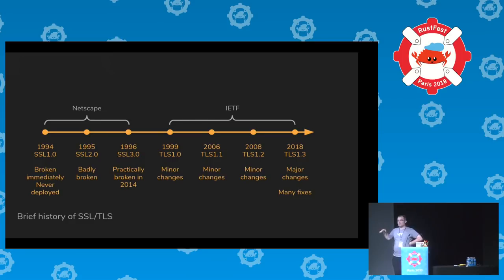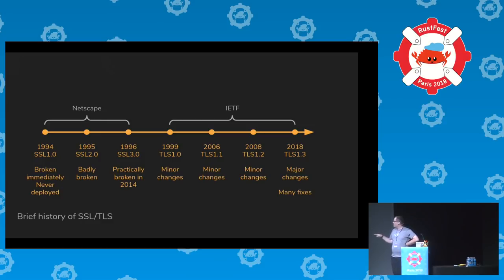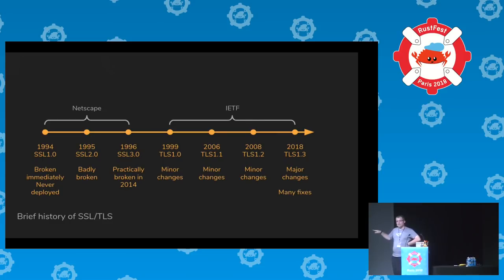A bit of history: SSL1 effectively didn't exist — the first time it was presented, someone in the audience broke it. SSL2 was also quite bad. SSL3 was the first version designed by a cryptographer and worked well, though the team was given only two weeks. TLS1 and SSL3 aren't really that different — the name changed when it moved from Netscape to the IETF.